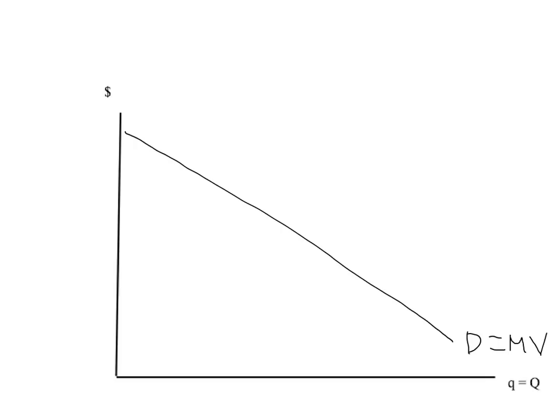Now let's put on the marginal cost curve. So we'll have that as a normal upward sloping marginal cost curve. Now before we put on marginal revenue, we have to think about how the monopoly prices. Well, we're assuming that the monopoly knows exactly the marginal value for every unit. So on the first unit, for example, back here, the monopoly is able to set a price for that unit exactly equal to the marginal willingness to pay for that unit to the highest valued buyer.